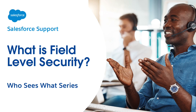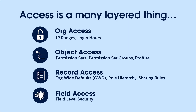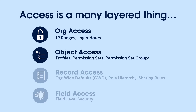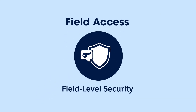Welcome to 'What is Field Level Security?' — the seventh video in the Who Sees What series. These videos provide admins the basics on visibility and data access in Salesforce. We've given users access to the organization by setting IP ranges and login hours, set the baseline level of access to objects through permission sets and permission set groups, and granted users visibility to records via organization-wide defaults and role hierarchies. Now we'll cover Field Level Security.